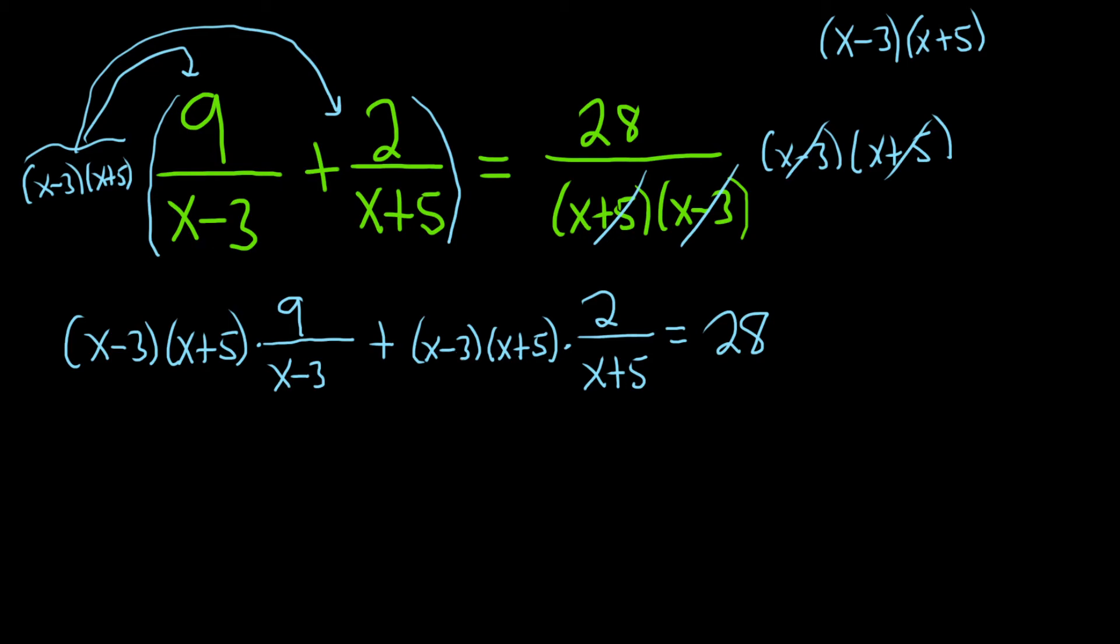Now we do get some cancellation on the left here. The x minus 3s go away. And then over here, the x plus 5s go away. So we're left with, I'm going to go ahead and put the 9 first. So 9 times (x plus 5) plus, and then 2 times (x minus 3). And that's equal to 28.